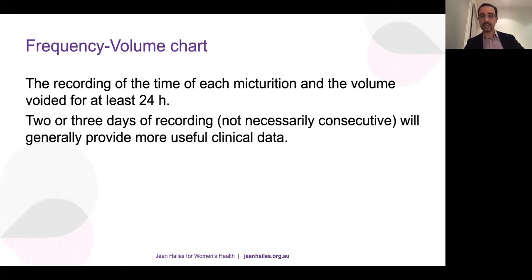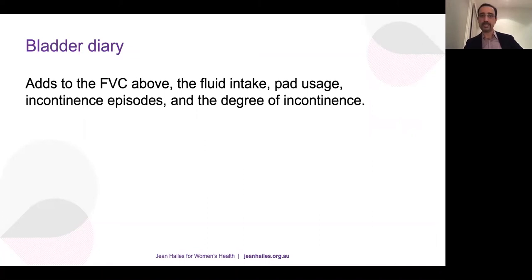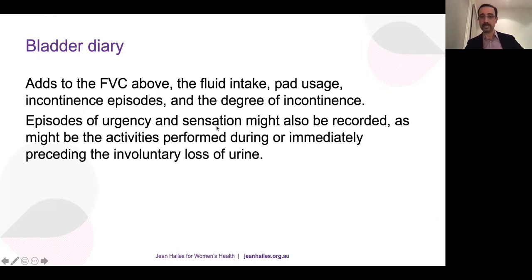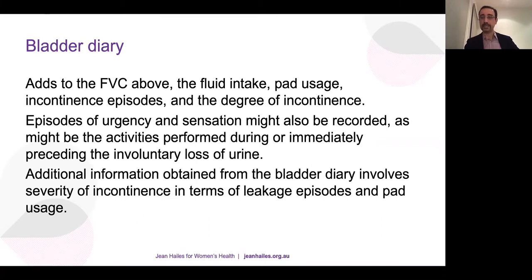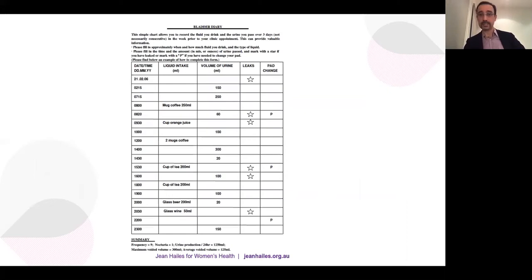A Frequency Volume Chart is a 24-hour chart recording frequency and volume of drinking and voiding — how many times you drank something, how many times you voided, and the measured void volumes. It becomes a bladder diary when you add pad usage, incontinence episodes, degree of incontinence, urgency episodes, and sensation. Usually done for two to three days — three days is preferred but two days is still acceptable. This is an example you can use for women to record episodes of incontinence, pad changes, urine output, and fluid intake.